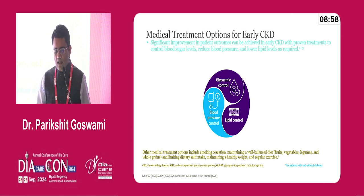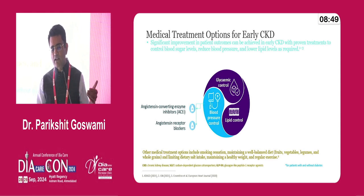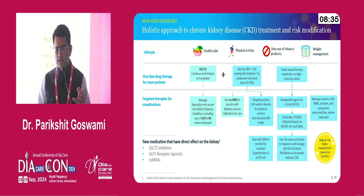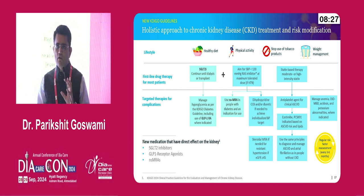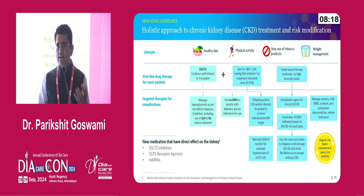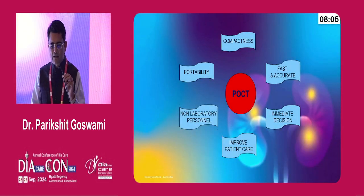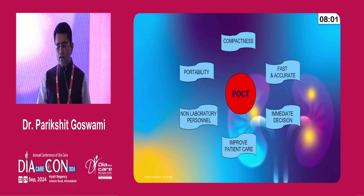We can offer this subset of patients many management options — apart from ACE inhibitors and ARBs, we now have SGLT2 inhibitors, GLP-1 receptor agonists, and non-steroidal mineralocorticoid receptor antagonists (nsMRAs). This is the KDIGO guideline for managing chronic kidney disease. We can offer a lot to our CKD patients in early stages — which is what we need to pick up early by investigating with eGFR and the easy availability of point-of-care devices. POCT offers compactness, portability, fast and accurate results, non-laboratory personnel use, improved patient care, and immediate decision-making.